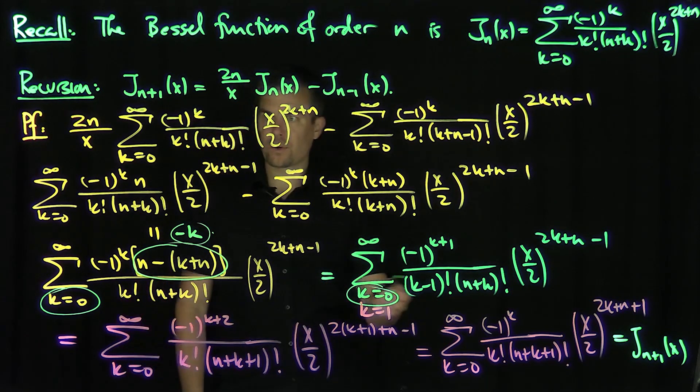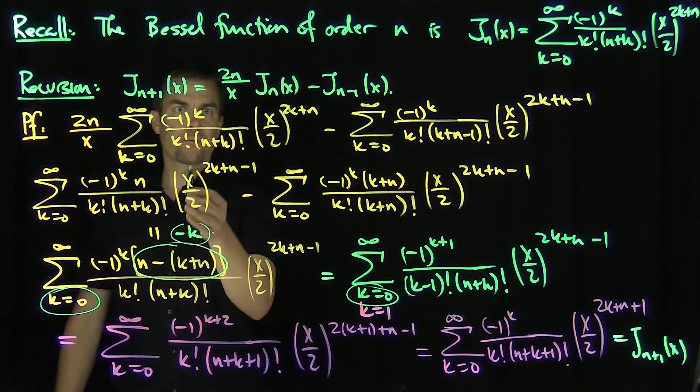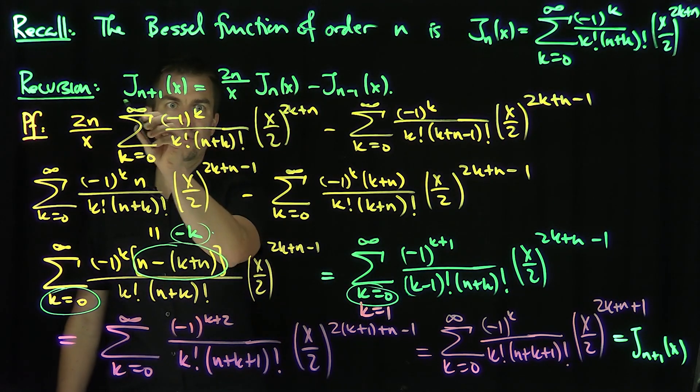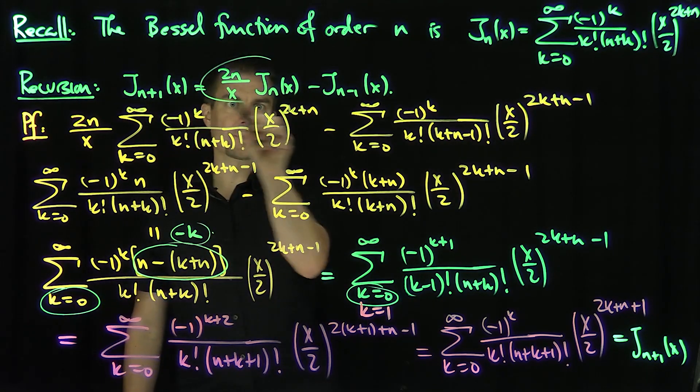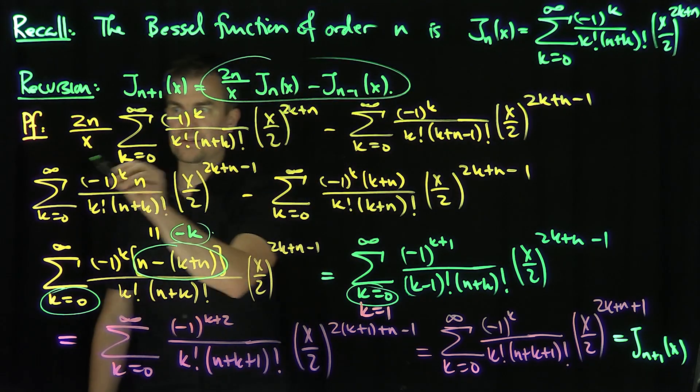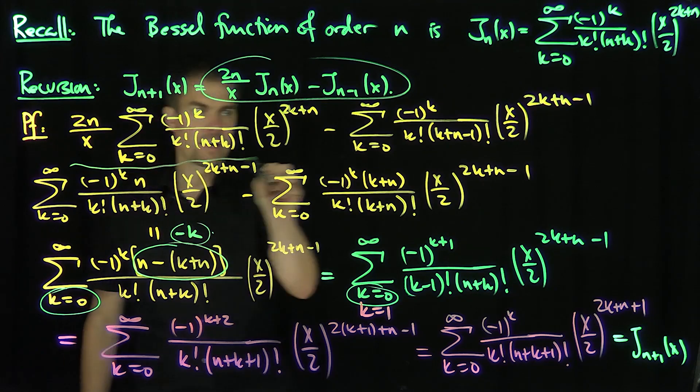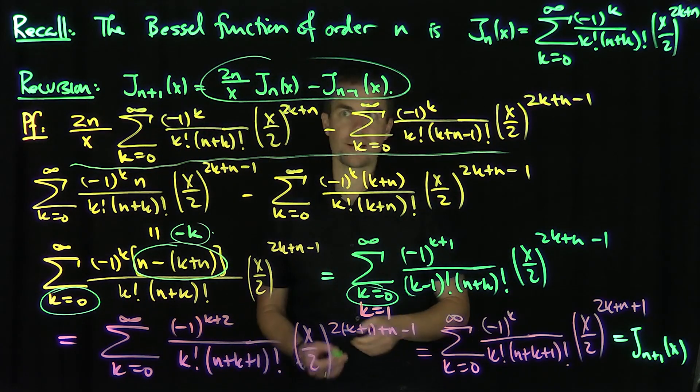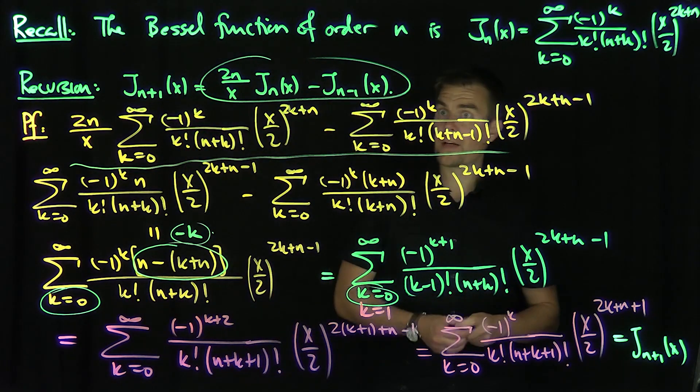We've therefore established our recursion relationship. The left-hand side is equal to J_{n+1}(x).